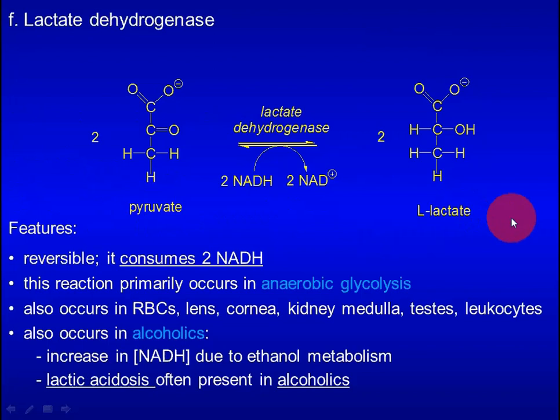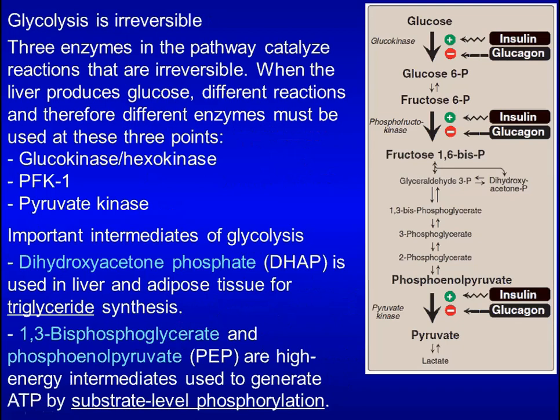Pyruvate can be converted to lactate under anaerobic conditions. This step consumes NADH and replenishes NAD+. This reaction primarily occurs in anaerobic glycolysis but also occurs in red blood cells, lens, cornea, kidney medulla, testes, leukocytes, and in alcoholics. Glycolysis is irreversible because of three irreversible steps. Important intermediates include dihydroxyacetone phosphate (DHAP), equivalent to 1,3-BPG.